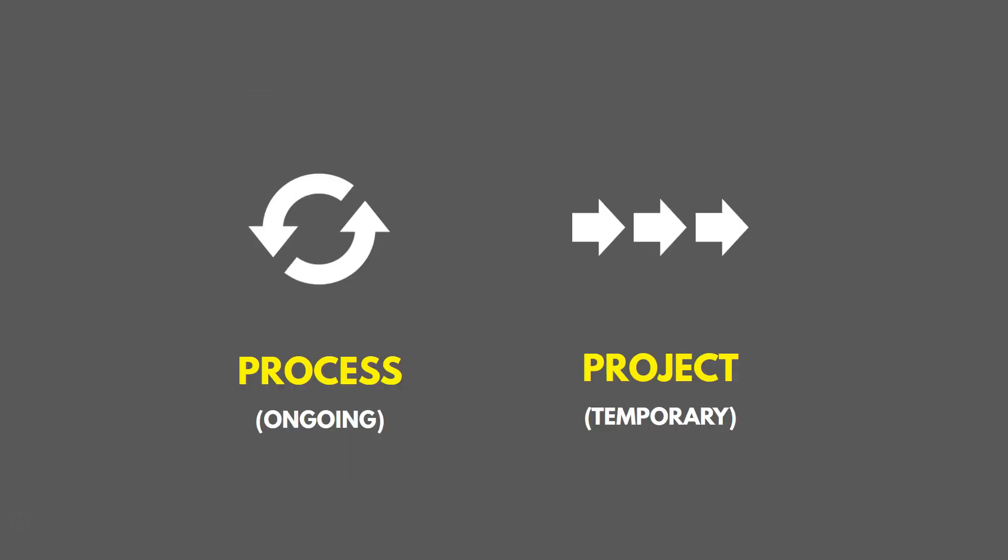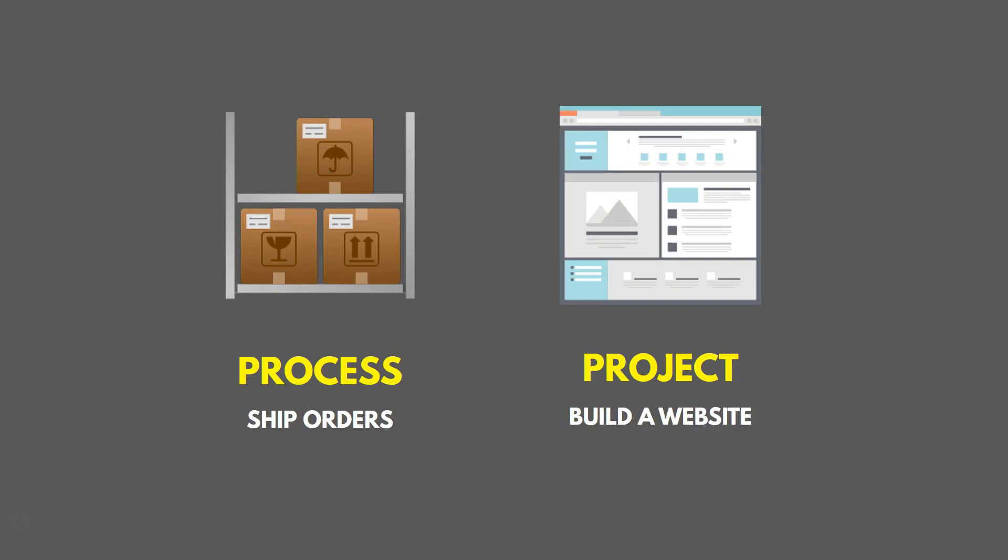It's important to distinguish between a process and a project. A process is something that's ongoing — we pretty much do it the same way every day. A project is temporary; we don't do it all the time, and we typically have a defined start and finish. For example, a process might be to ship orders, while a project might be to build a brand new website.